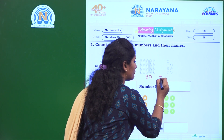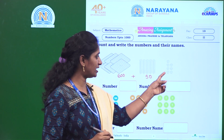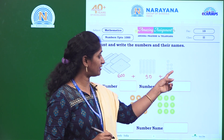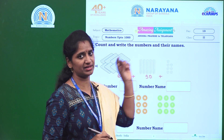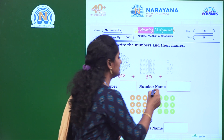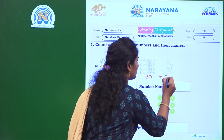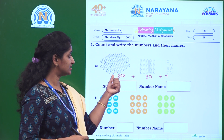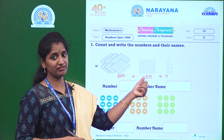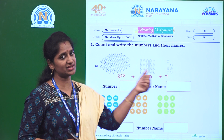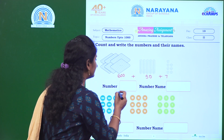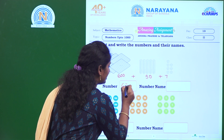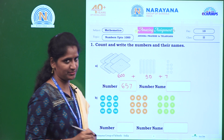And how many ones here? 1, 2, 3, 4, 5, 6, 7. How many ones? 7 ones. So, what is the number? 657. Write the number here: 657.